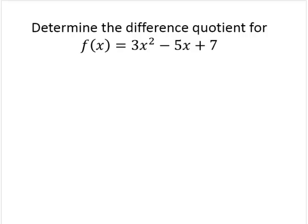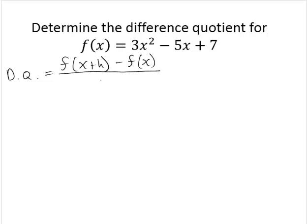Determine the difference quotient for f(x) = 3x² - 5x + 7. Recall that the difference quotient is generally defined as the function evaluated at x plus h, subtract the function evaluated at x, over h.